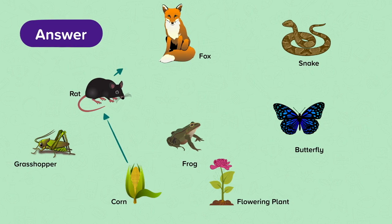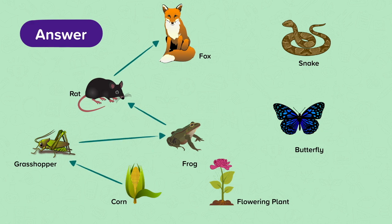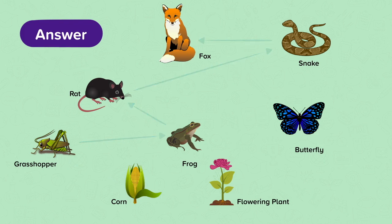And here is the answer with the food web. The eight food chains using corn are: corn to rat to fox; corn to rat to snake to fox; corn to grasshopper to rat to fox; corn to grasshopper to frog to fox; corn to grasshopper to frog to rat to fox; corn to grasshopper to frog to snake to fox; corn to grasshopper to rat to snake to fox; and corn to grasshopper to frog to rat to snake to fox.